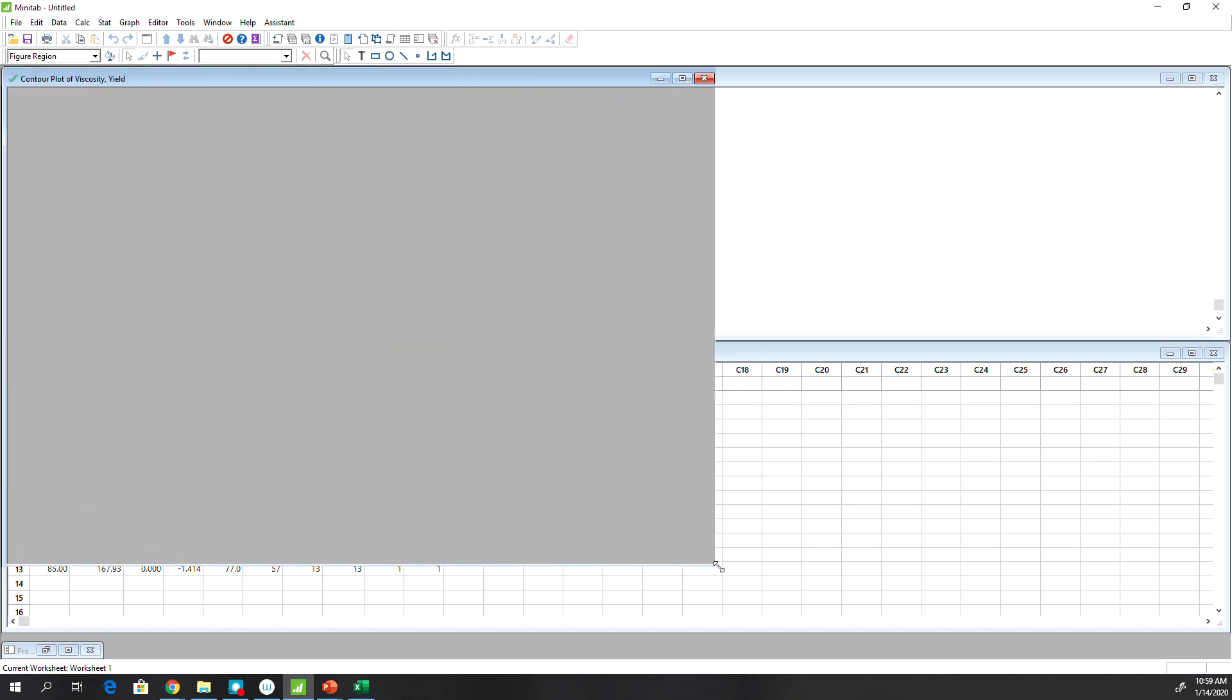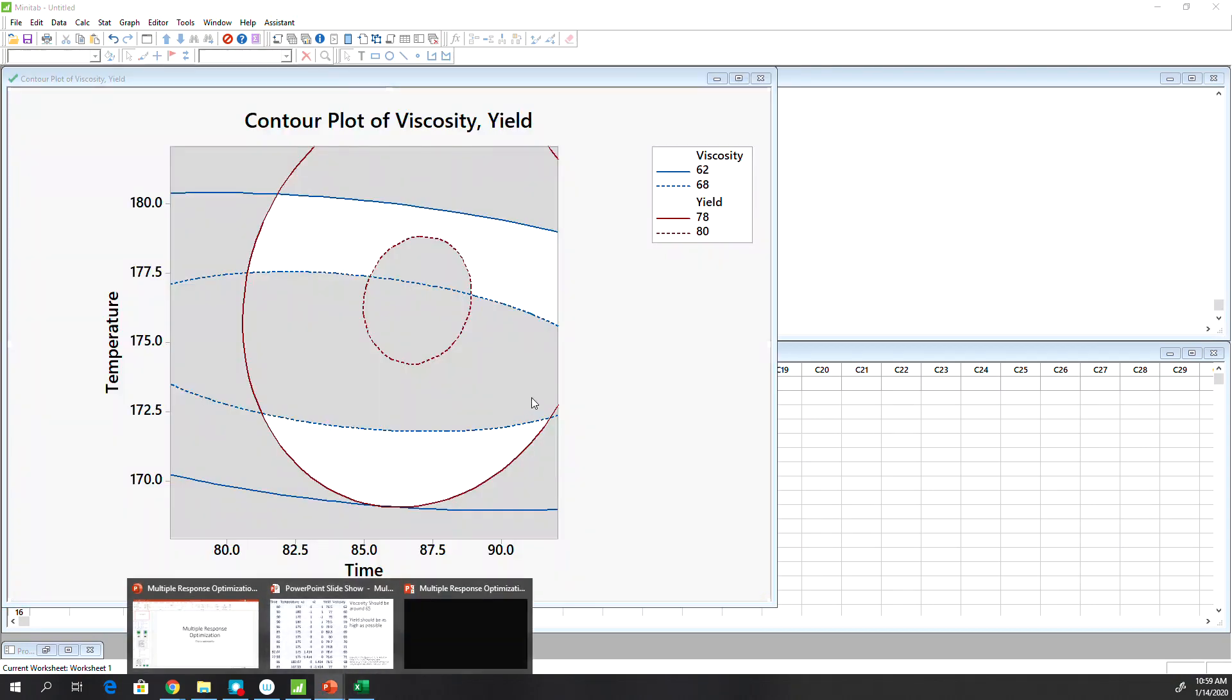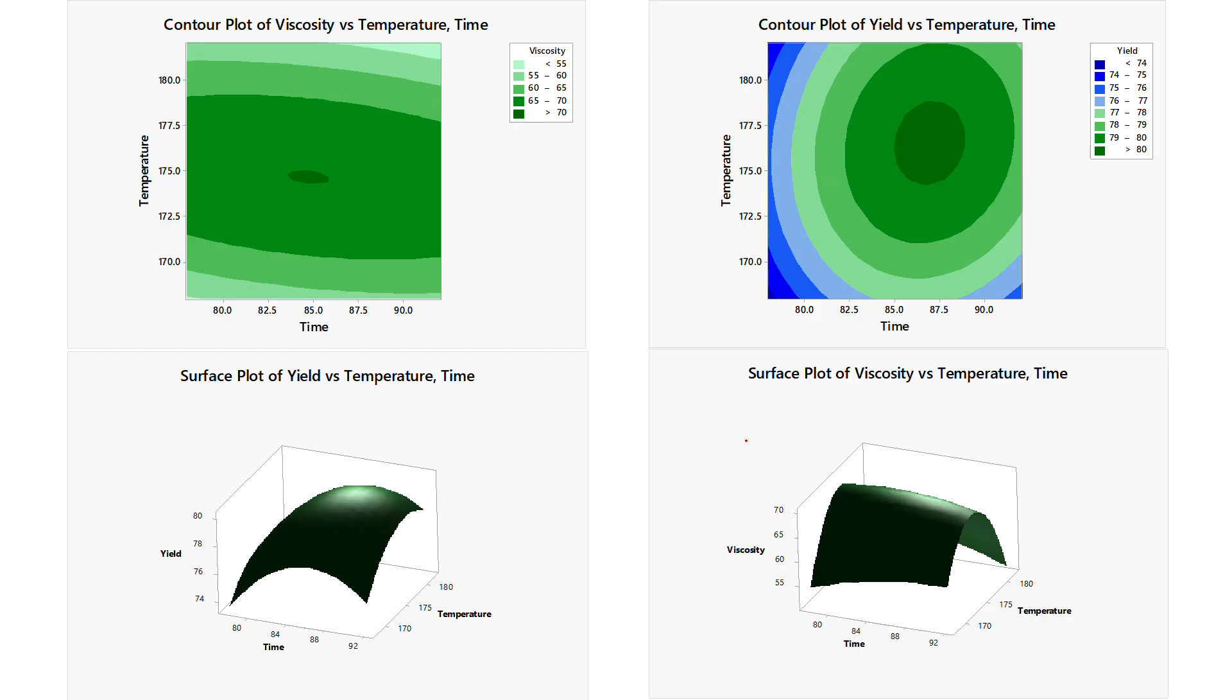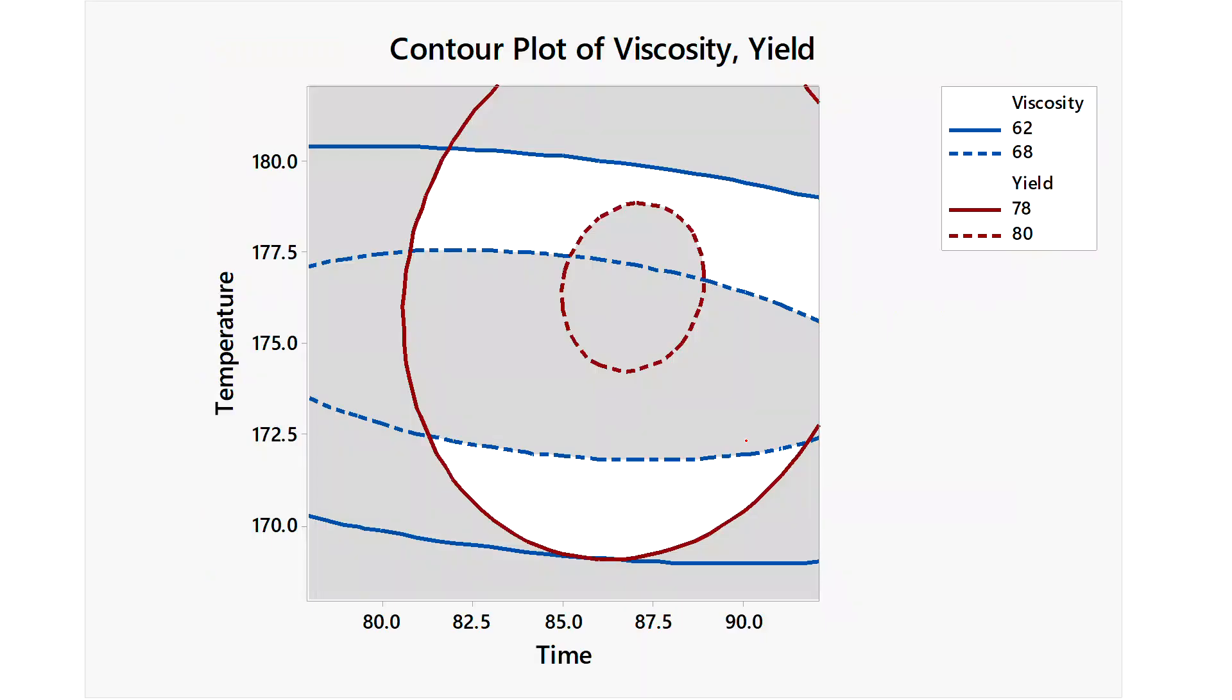If you look at the data set right here, that will give you, if you look at the data set, the highest yield is around 80. And then viscosity is the middle value that we are shooting for. So this is the individual responses. We're not going to talk about that. And this is the one I have produced in Minitab.